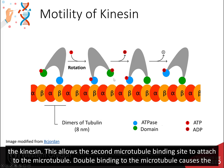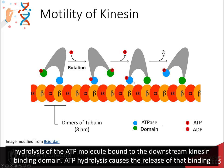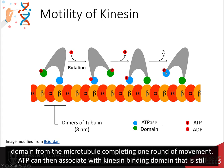Double binding to the microtubule causes the hydrolysis of the ATP molecule bound to the downstream kinesin binding domain. ATP hydrolysis causes the release of that binding domain from the microtubule, completing one round of movement.